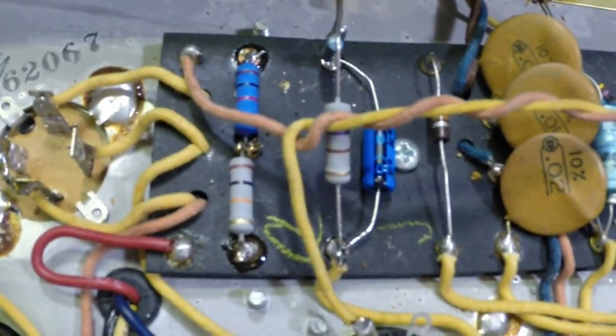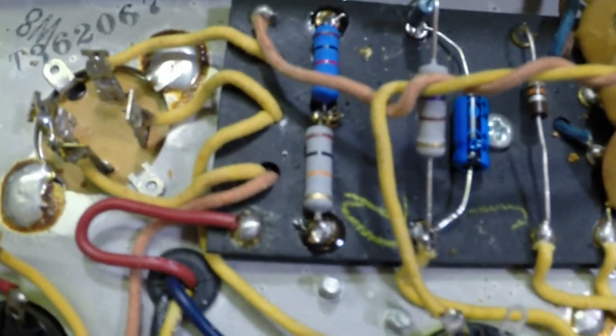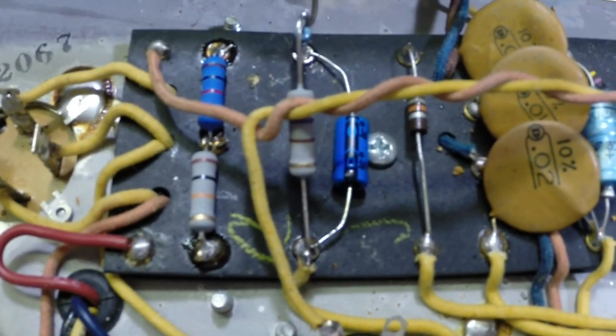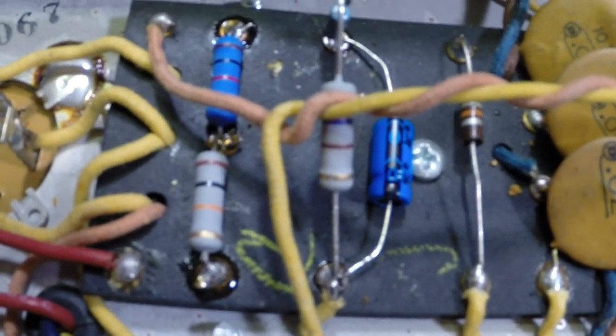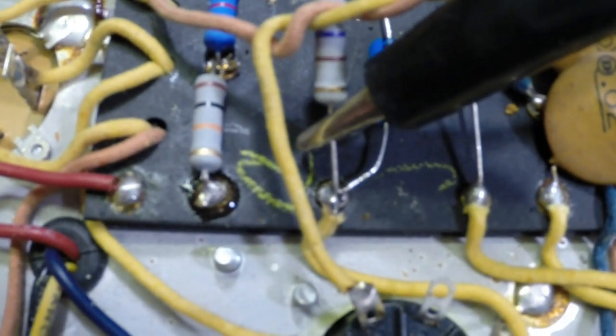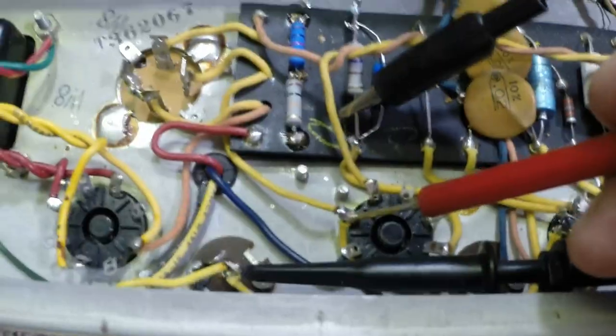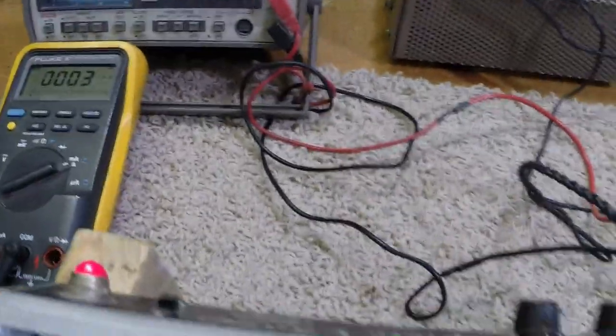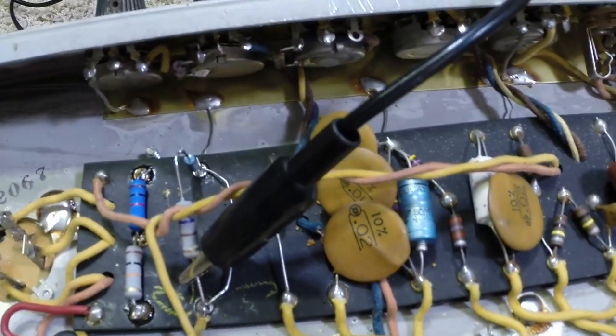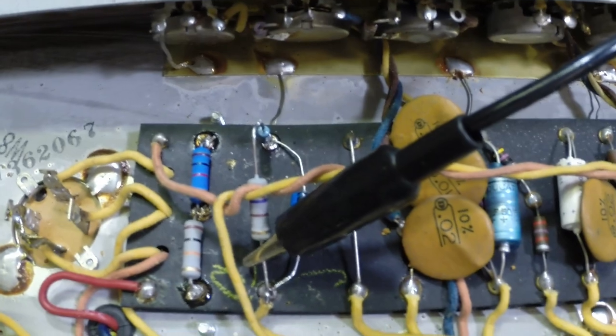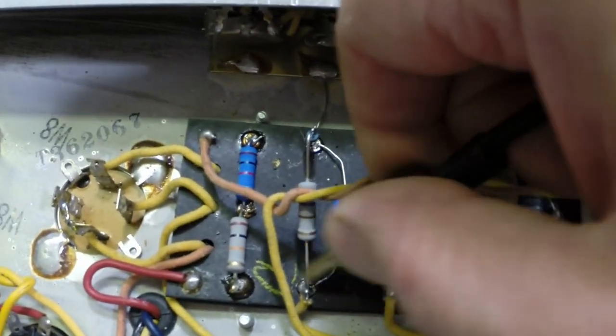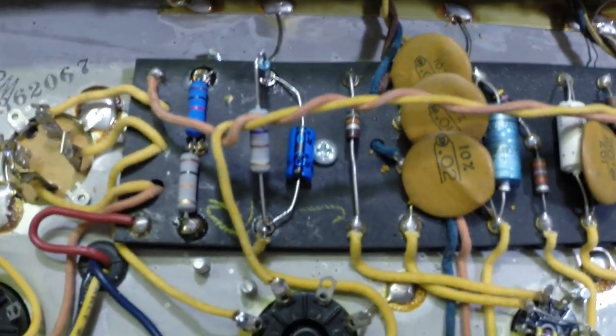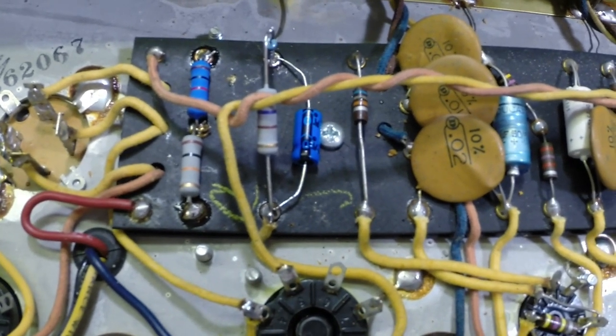Now, we mentioned that the screen voltage was much lower. The screen voltage is actually 303 volts. Doing the math on that, that tells you that we ought to come up with about roughly 7 mils. Now, we're peeking out here when we're cranking this thing at 12, but we're not exceeding the voltage for the tube like it was before. And you notice that the screen voltage is actually lower than the plate voltage, which it should be. So, we've got a much more stable amplifier.